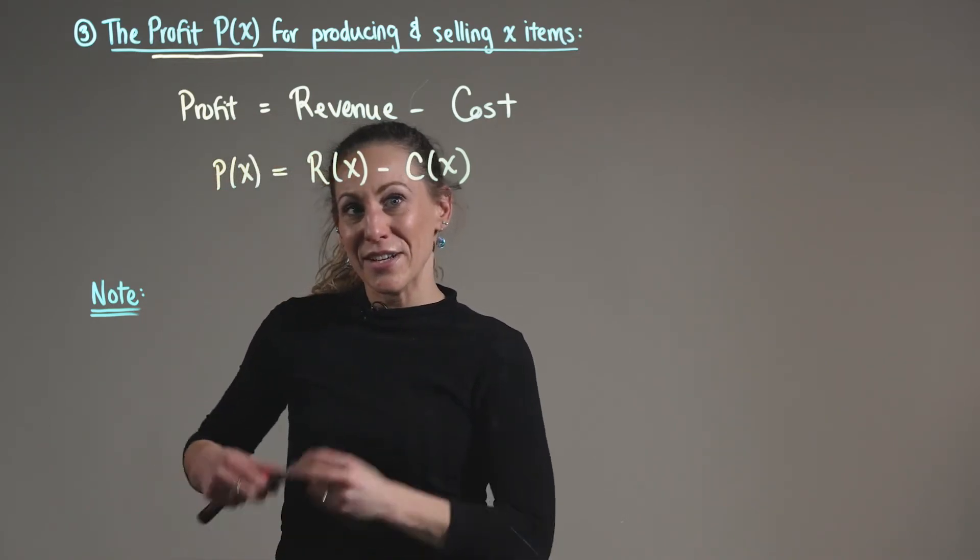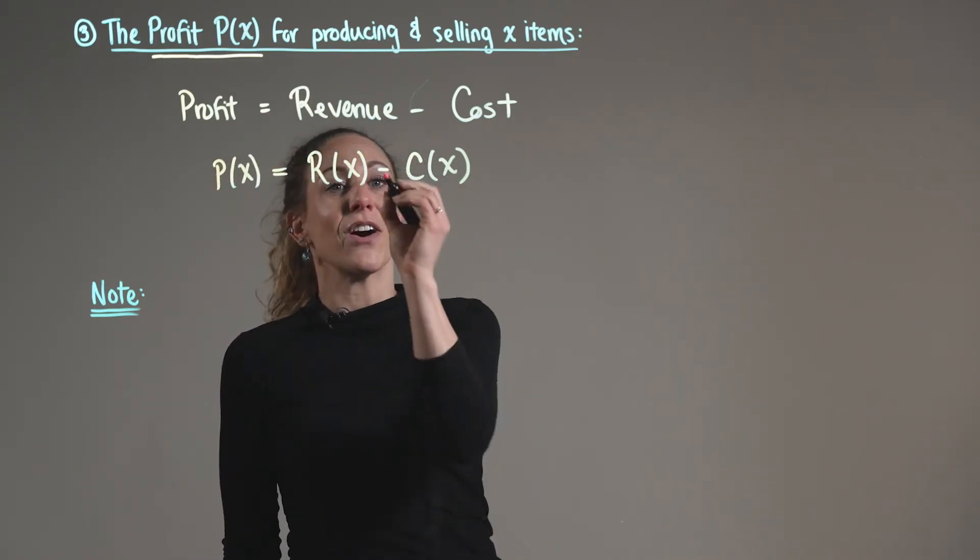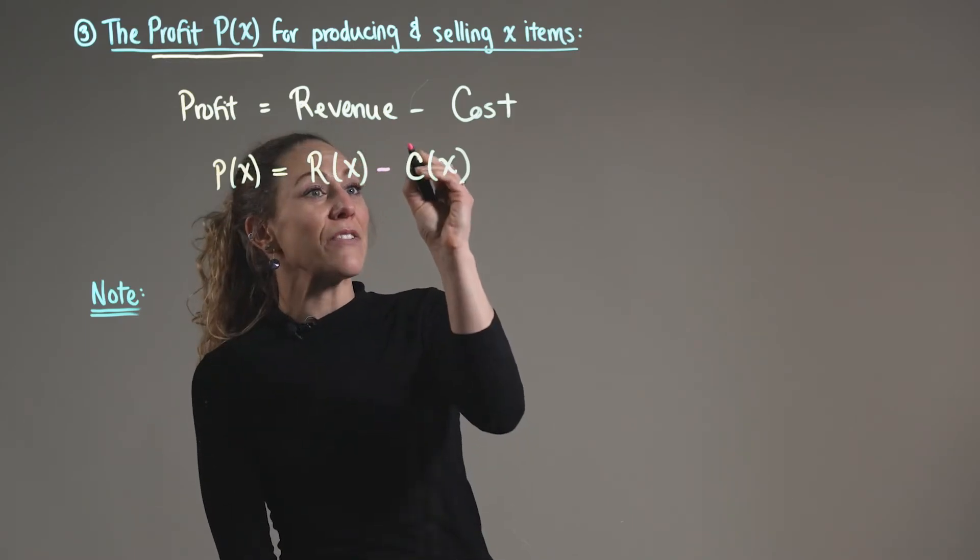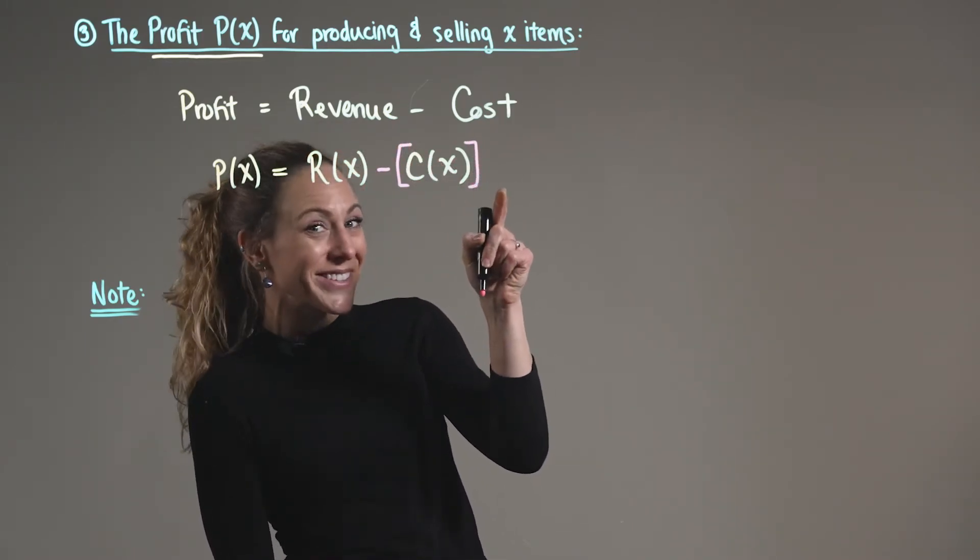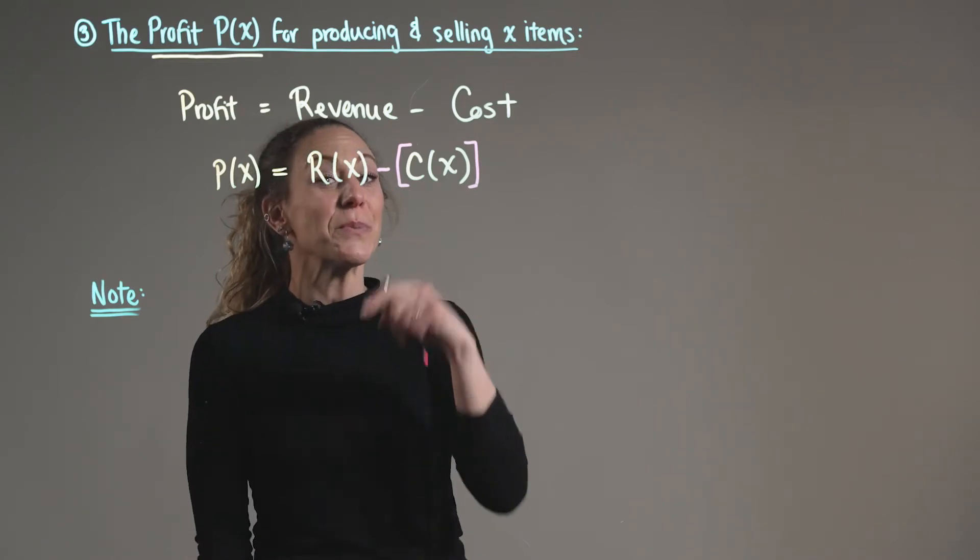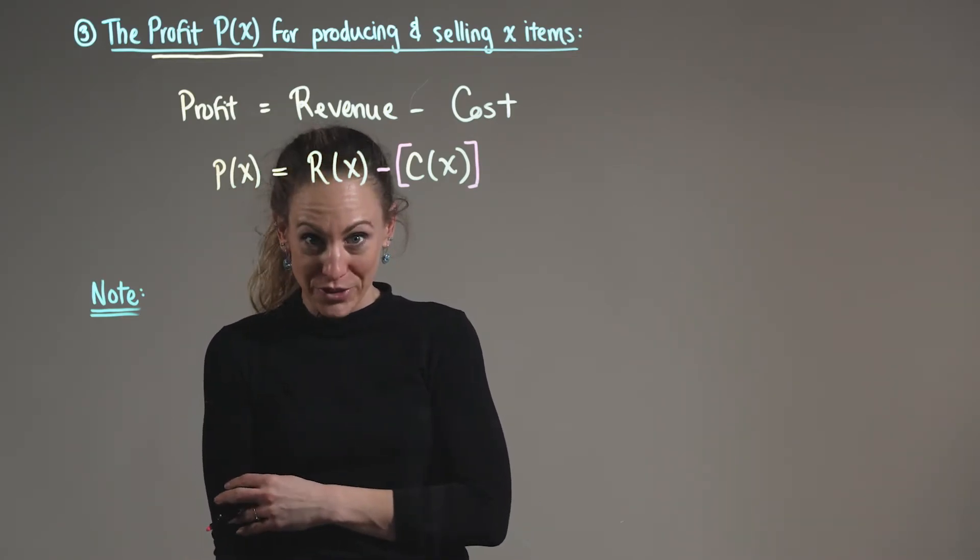Be careful here. Since we're subtracting our cost function, it can be beneficial to incorporate parentheses or brackets so that we don't forget to distribute that negative sign through to both terms.